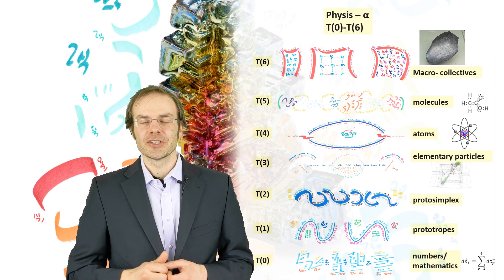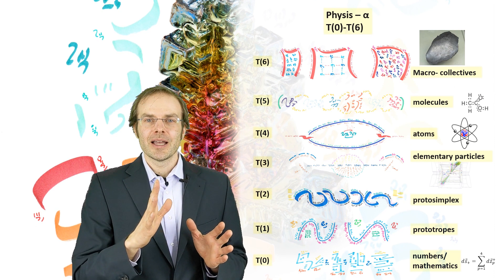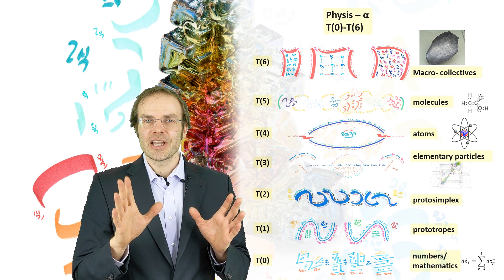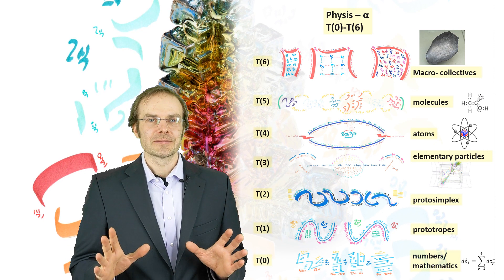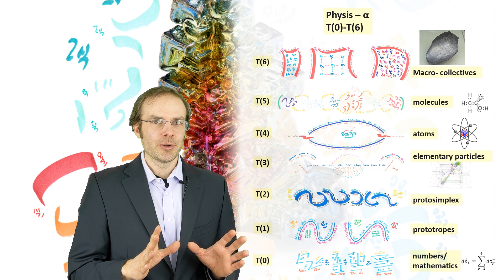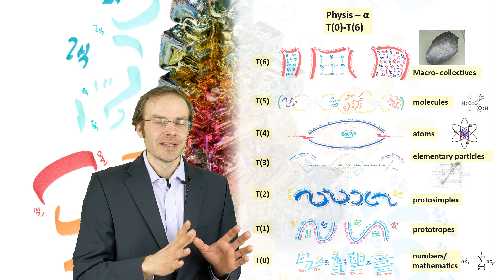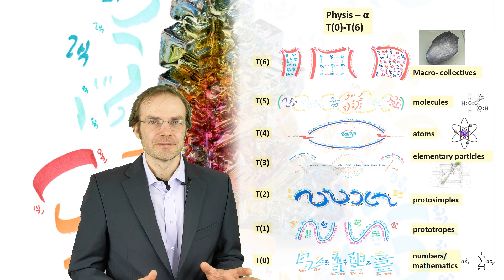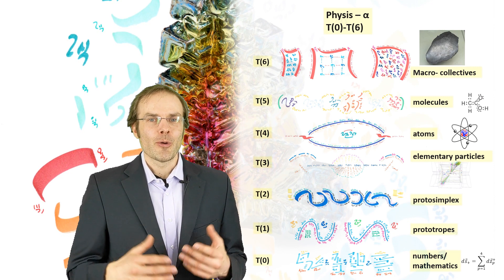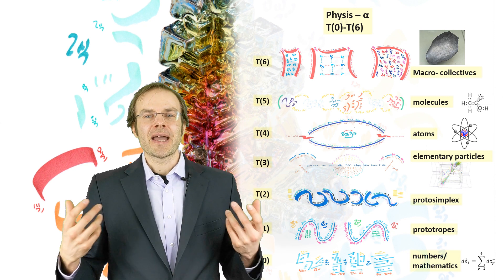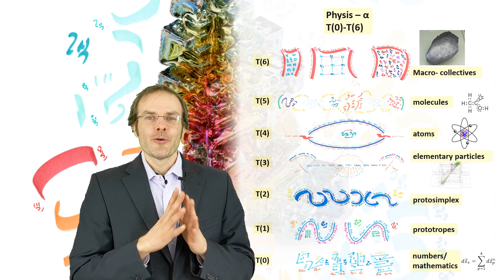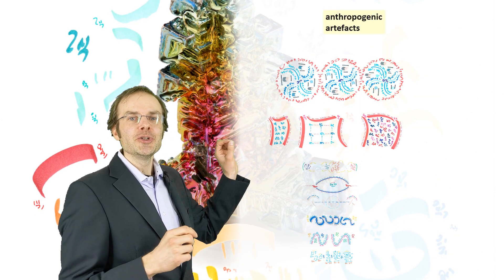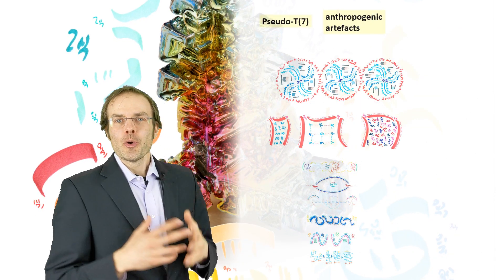If you paid close attention just now, I said rocks and air, and I was careful not to mention any man-made objects. I was only referring to inorganic, naturally occurring, inanimate objects. What about all those things that are man-made? For those, Heim added another totality, and he called it pseudo-seven. Why is it pseudo?